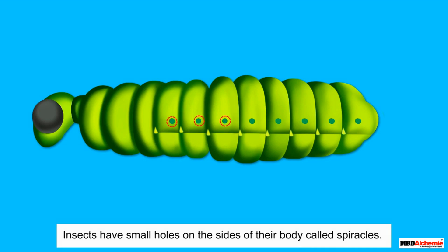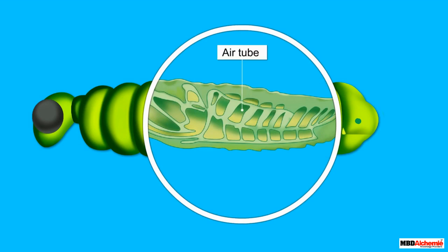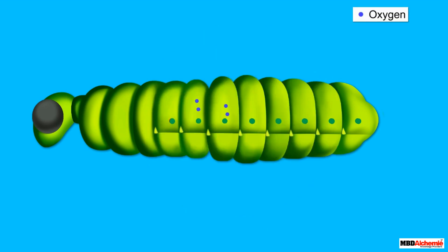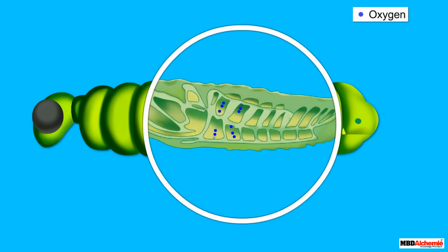Next, let us learn about the breathing organs of insects. Insects have small holes on the sides of their body called spiracles. These spiracles are connected to a network of air tubes that reach all parts of their body. Air enters inside an insect's body through the spiracles and reaches all body parts with the help of this network. Different body parts take in oxygen.